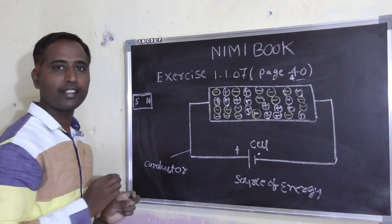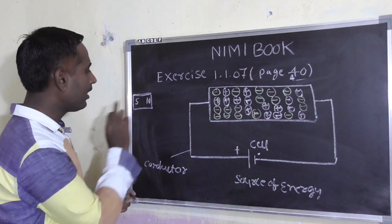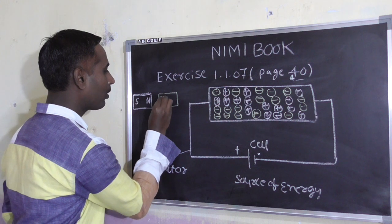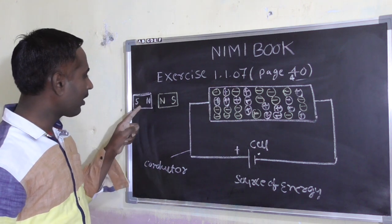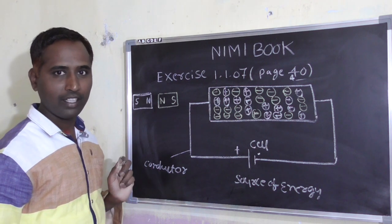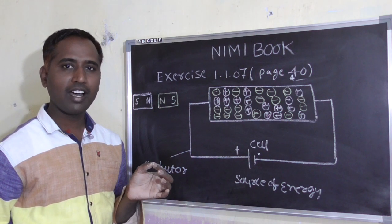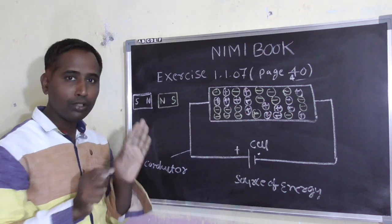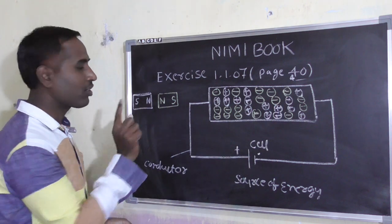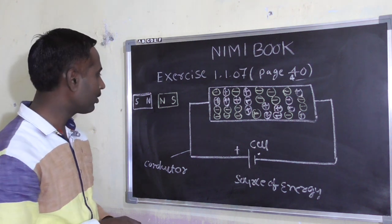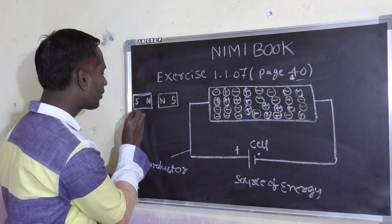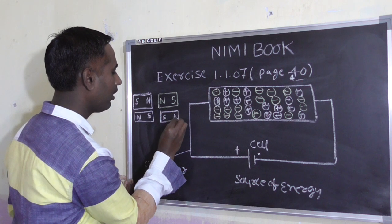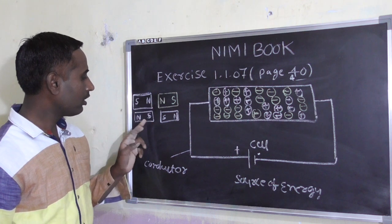One magnet has a north pole and a south pole. Take another magnet — it also has a north pole and a south pole. Now, here there is a north pole, and here also there is a north pole. Law of repulsion says: like poles repel each other. North-north same poles repel each other. So also south-south repel each other.